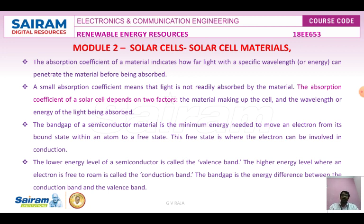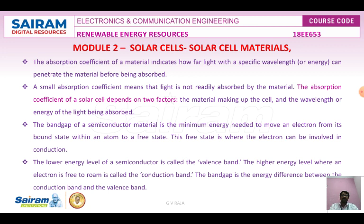The band gap of the semiconductor material: the upper band is the conduction band and the lower one is the valence band, with 1.5 electron volts being the energy required for moving from the valence band to the conduction band — that is the forbidden energy gap, the minimum energy needed to move an electron from its bound state within an atom to a free state. The lower energy level is called the valence band, the higher energy level where an electron is free to roam is the conduction band, and the separation between them is the forbidden energy gap.